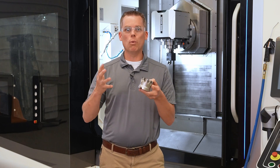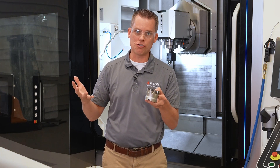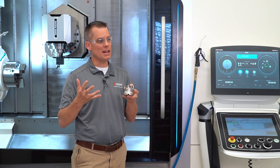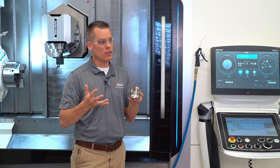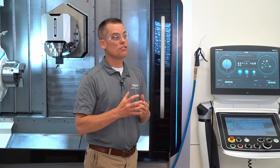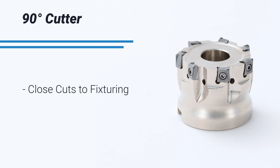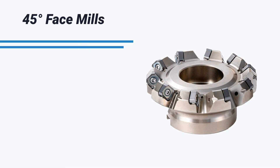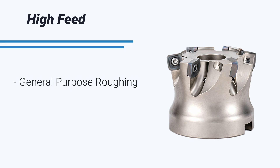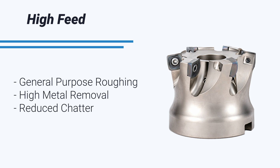So if high feed mills are so great, when would you not want to use one versus a square shoulder cutter? If your machine tool lacks the feed rate capability needed by a high feed mill to show value, then perhaps a square shoulder cutter would be a better option. In conclusion, 90 degree cutters are best for reaching close to fixturing and general versatility; 45 degree facemills offer the maximum amount of economy and the smoothest finish; and high feed mills are best for general purpose roughing, maximum metal removal rates, and minimizing chatter at long overhangs.